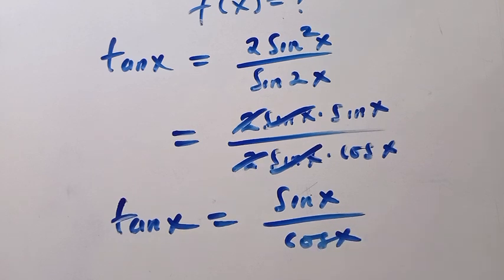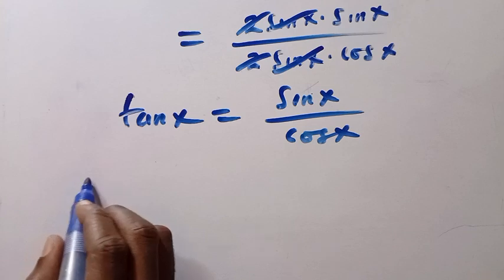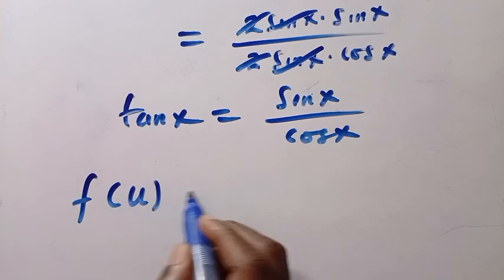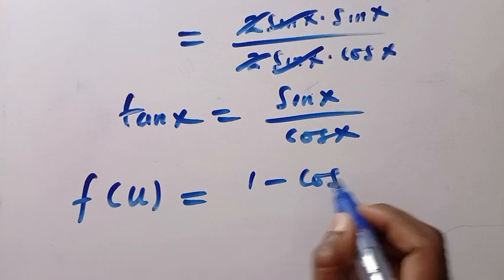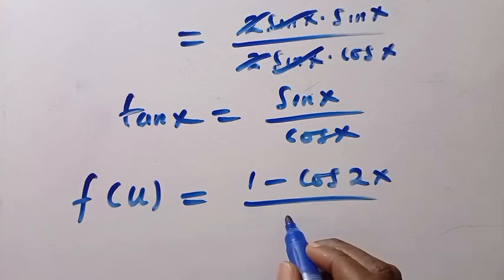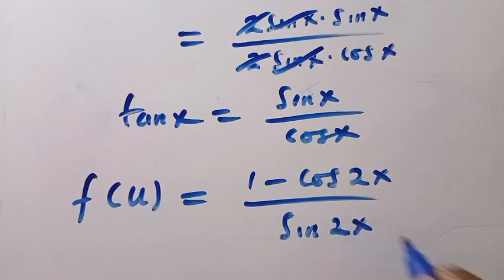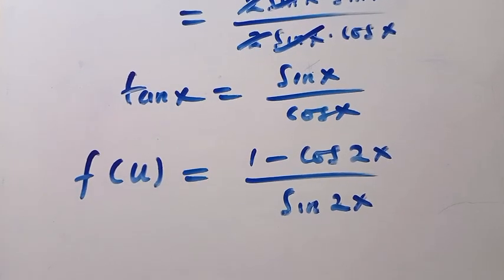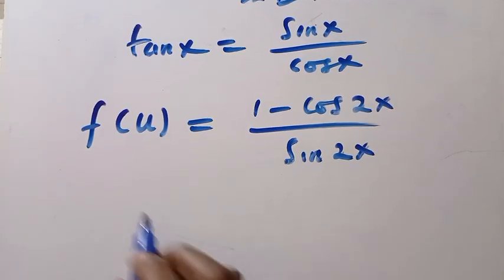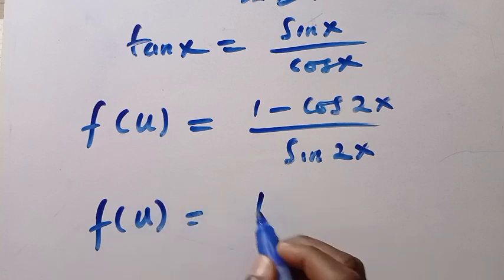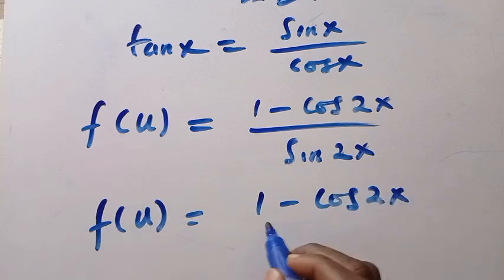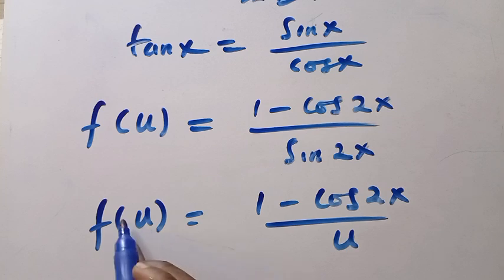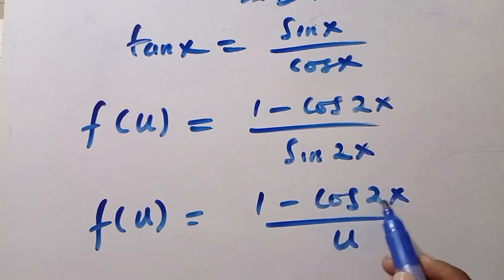And if now we call back from what we have from the beginning, we are going to confirm the relation that f of u equals 1 minus cos 2x divided by sin 2x. So in the next step, let's try and replace sin 2x with u, because we have already let sin 2x equal u from the beginning. So we have f of u equals 1 minus cos 2x divided by u. We are trying to express everything in terms of u.